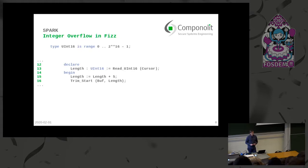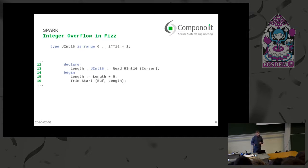Let's have a practical look at Spark. Here I've implemented the attackable code part. It's really similar to what we saw before. We declare a length variable of an integer type and then read some 16-bit value from an external source. Then we add five to the length, like what was done before, and use this length variable later on. Spark is different from C++ in that we usually don't use built-in integers.